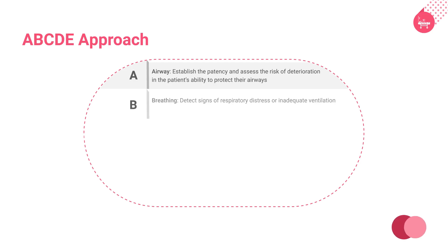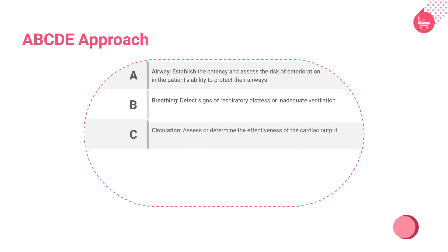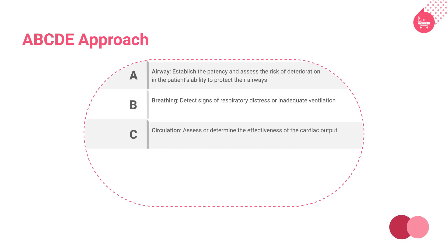B is for breathing, designed to detect signs of respiratory distress or inadequate ventilation. C is for circulation — the aim is to assess or determine the effectiveness of the cardiac output.